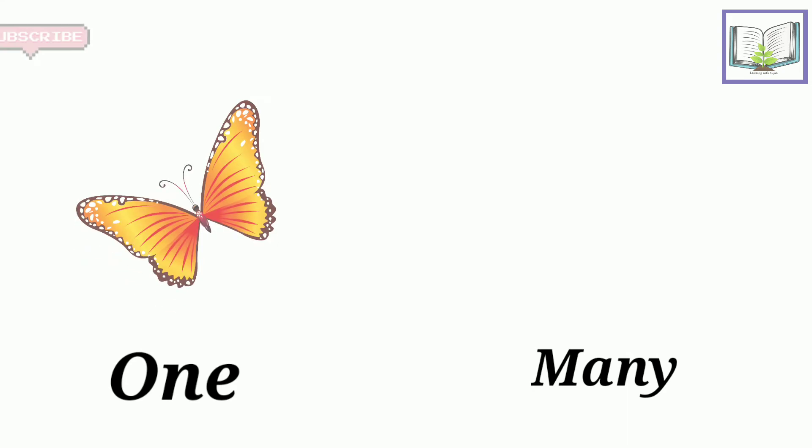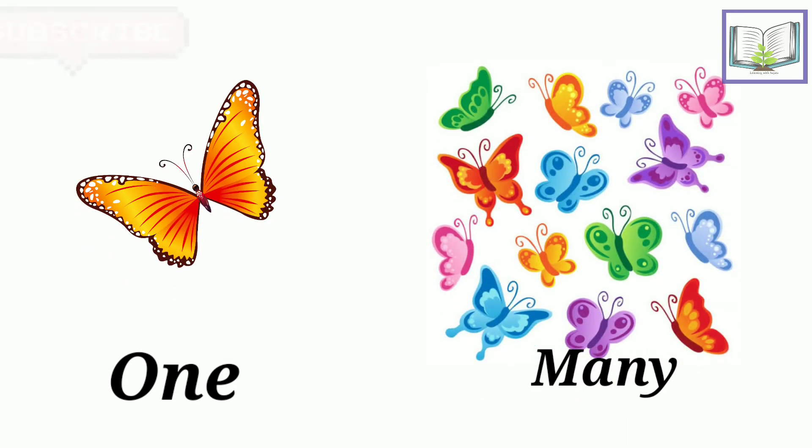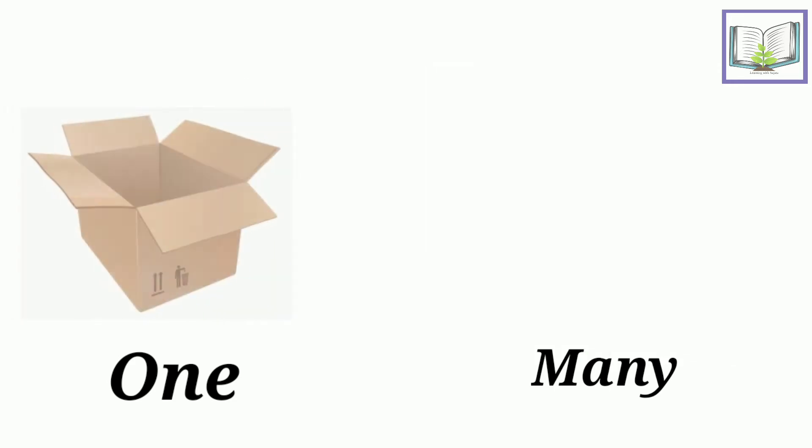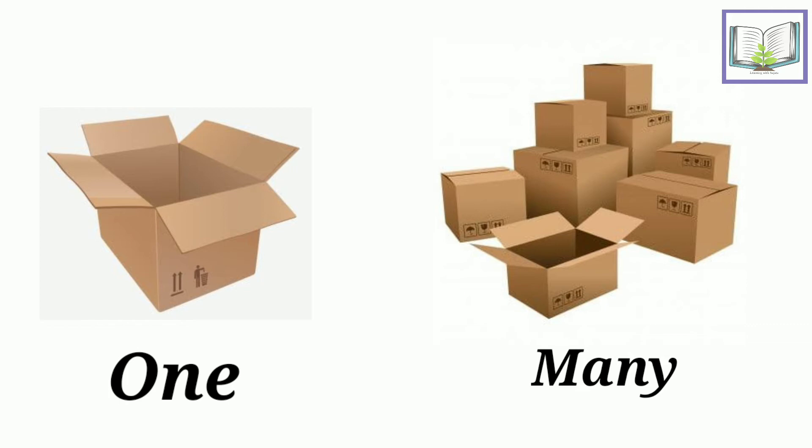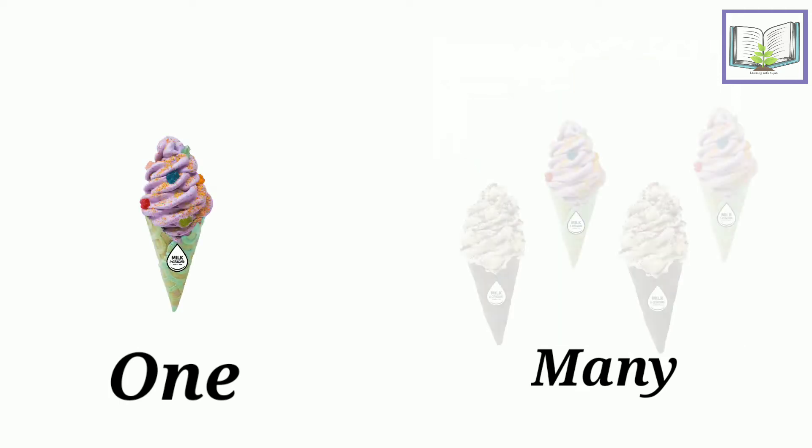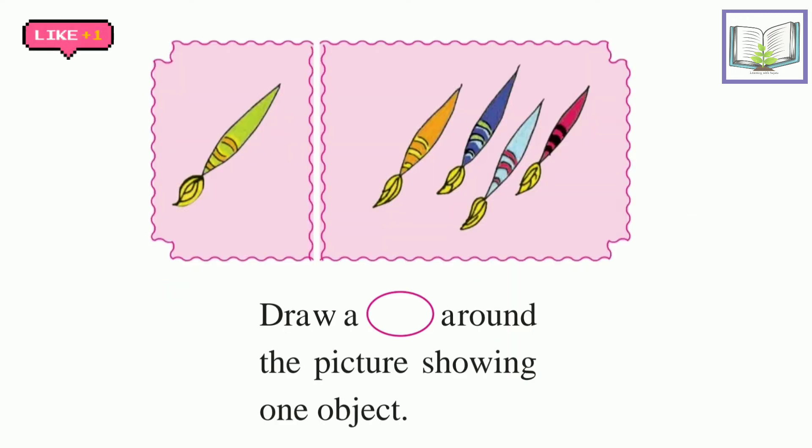Let's see some examples. One butterfly. Here are many butterflies. Here is one box. There are many boxes. Here is one ice cream cone. There are many ice cream cones. Yummy, right? Let's solve some questions.